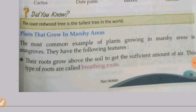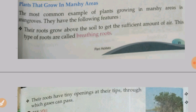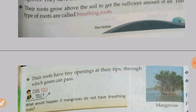Plants that grow in marshy areas — marshy means muddy. The most common example of plants growing in marshy areas is mangroves. Their roots grow above the soil to get a sufficient amount of air. These types of roots are called breathing roots, because the roots cannot breathe under the muddy soil, so they come out of the soil to breathe.